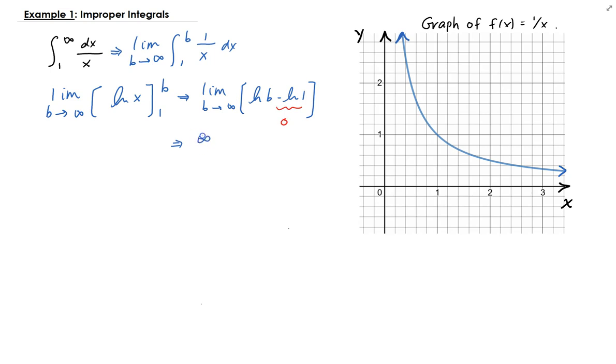Therefore, this is diverging. So what this means, what this implies graphically is that we're looking at the function 1 over x. This is part of the graph of 1 over x.